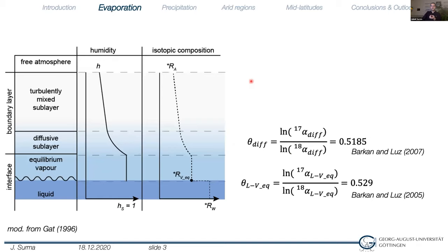The fundamental driving mechanism of 17OxS variations in water is fractionation during evaporation from a water surface. This is described by the 1965 Craig and Gordon evaporation model, which subdivides the air column above the fluid into a saturated equilibrium layer and a boundary layer where molecular diffusion takes place. The humidity gradient between the free atmosphere and the saturation layer triggers diffusive fractionation. Both processes have distinctively different theta values, which cause these 17O anomalies. Importantly, these values were determined experimentally and this process is temperature independent.